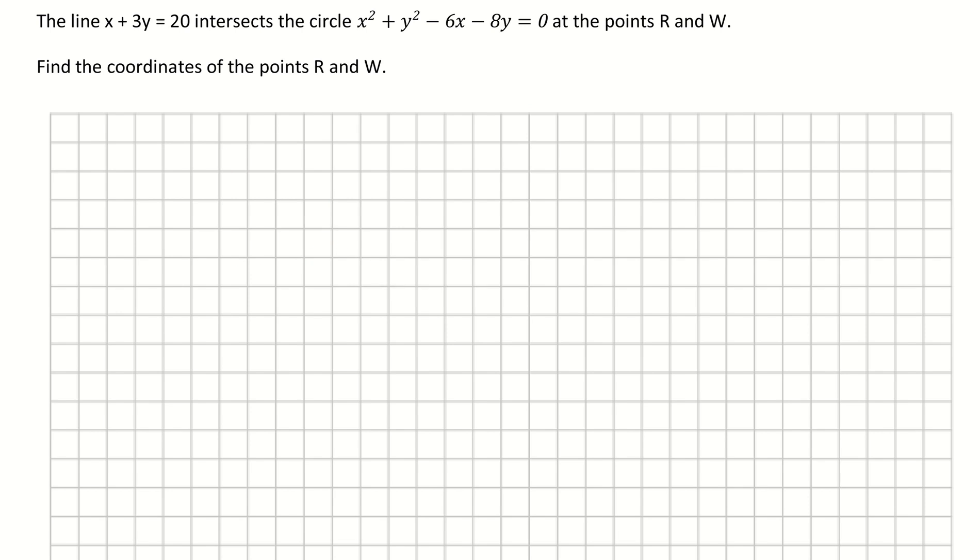To start this question, we first take our equation of the line, which is x + 3y = 20. We want to manipulate that in terms of x or y, so I'm going to have x = 20 - 3y, moving the 3y over and subtracting it.